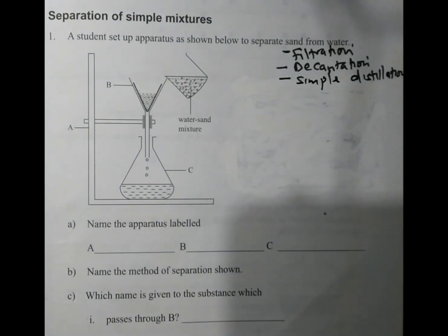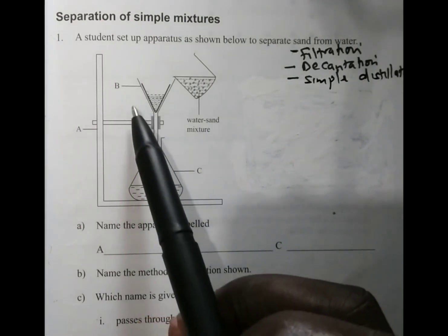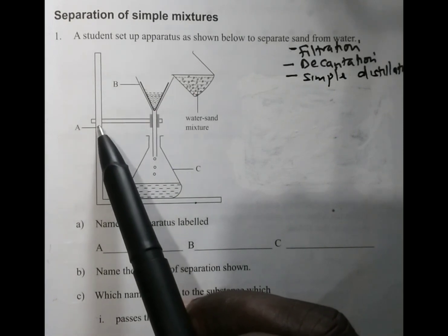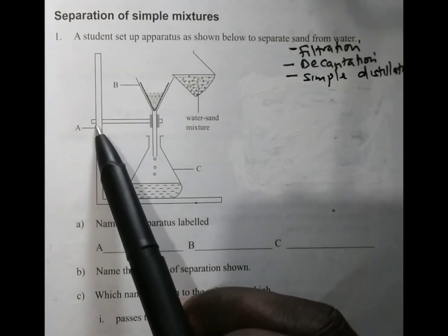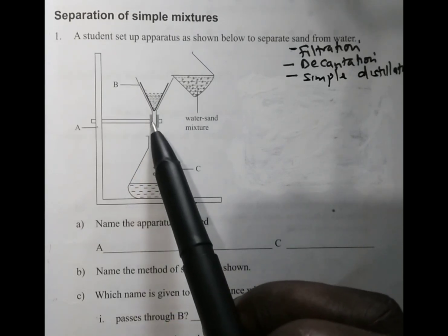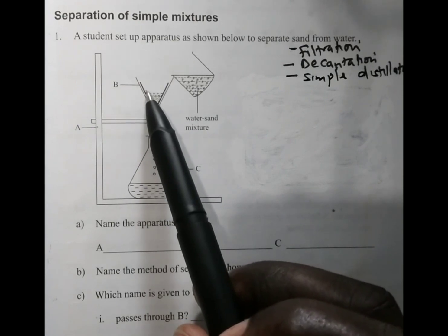Let us work through the question. We have various parts of this setup. We have part A which is our retort stand, also known as the clamp stand. We have B which is the separating funnel, but inside the separating funnel we have the filter papers.